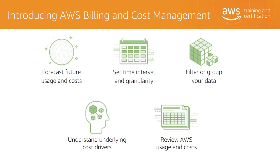AWS Billing and Cost Management is the service that you use to pay your AWS bill, monitor your usage, and budget your costs. Billing and Cost Management enables you to forecast and get a better idea of what your costs and usage may look like in the future, so that you can plan ahead. You can set a custom time period and determine whether you would like to view your data at a monthly or daily level of granularity.